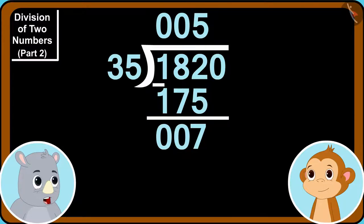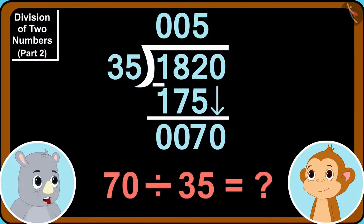Now, we will subtract 175 out of 182. Now, we will bring down zero and write it next to the 7 at the bottom in this way. Now, at the end, tell me Babban, can we divide 70 by 35?